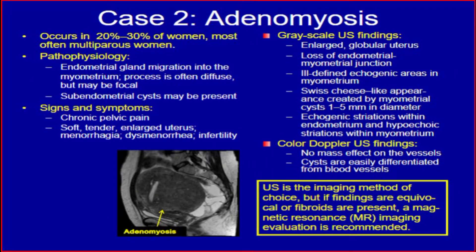Adenomyosis occurs in 20 to 30% of women, most often multiparous women. Pathophysiology: endometrial gland migration into the myometrium. The process is often diffuse but may be focal. Sub-endometrial cysts may be present. Signs and symptoms include chronic pelvic pain, soft tender enlarged uterus, menorrhagia, dysmenorrhea, or infertility.